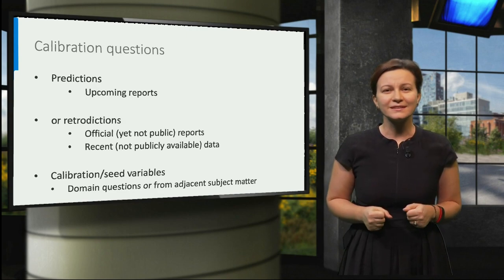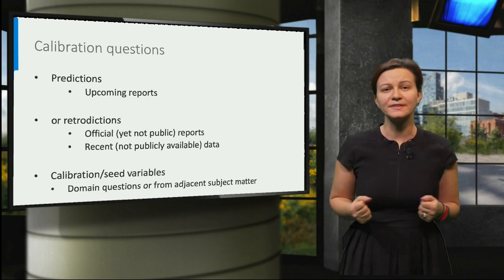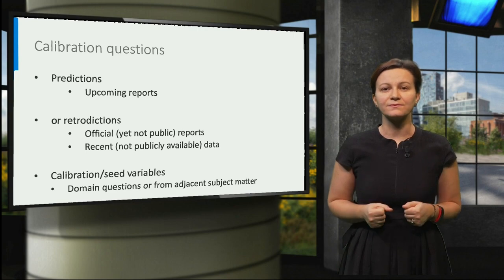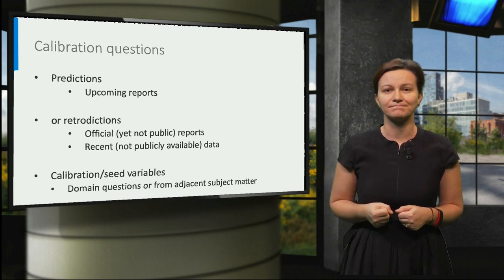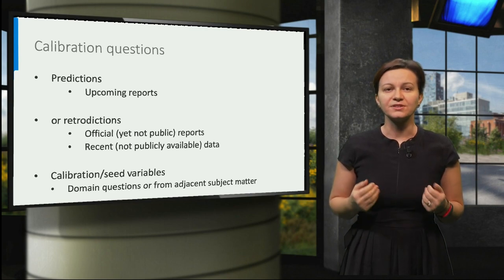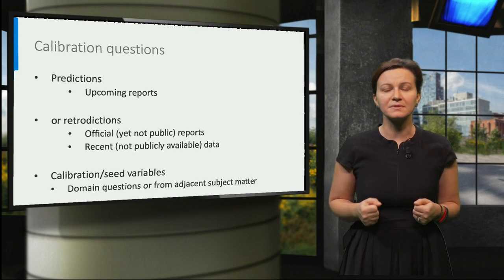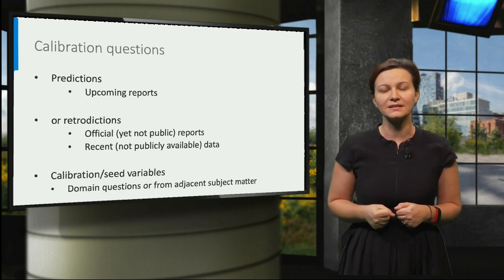Unfortunately, this is not always possible. Then one would have to rely on data already available. The data are then referred to as retrodictions. Good sources are official but not yet public reports, or recent and again not publicly available data.